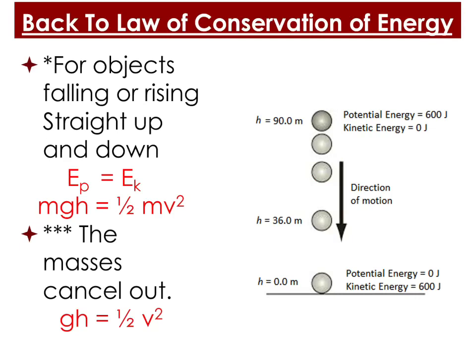We know that if the potential energy at the top is 600 joules, then the kinetic energy at the very bottom should be 600 joules. Basically, the maximum potential energy is always equal to the maximum kinetic energy.